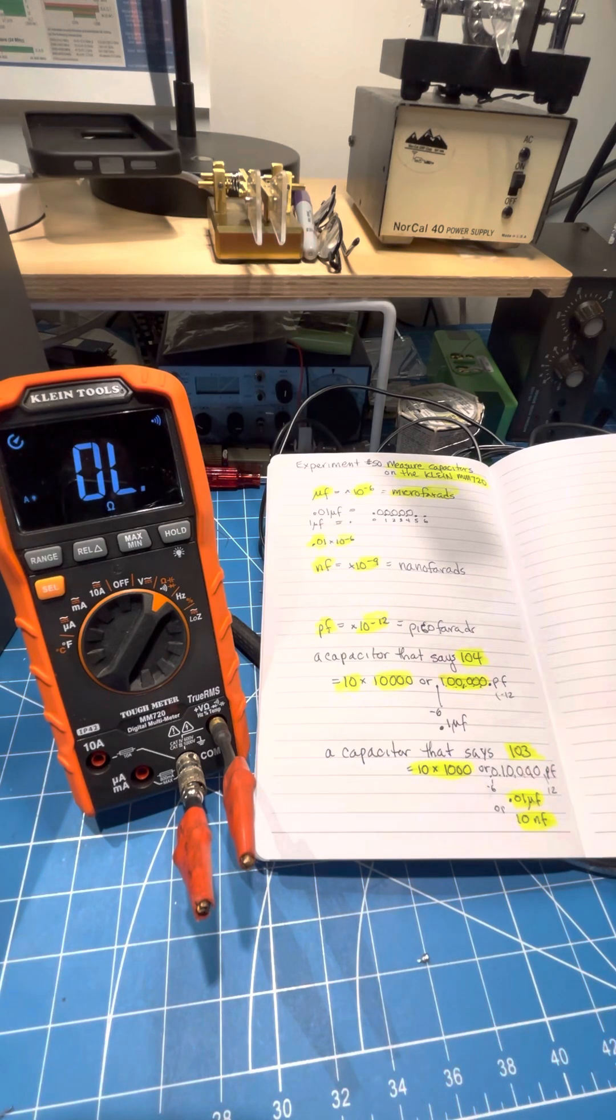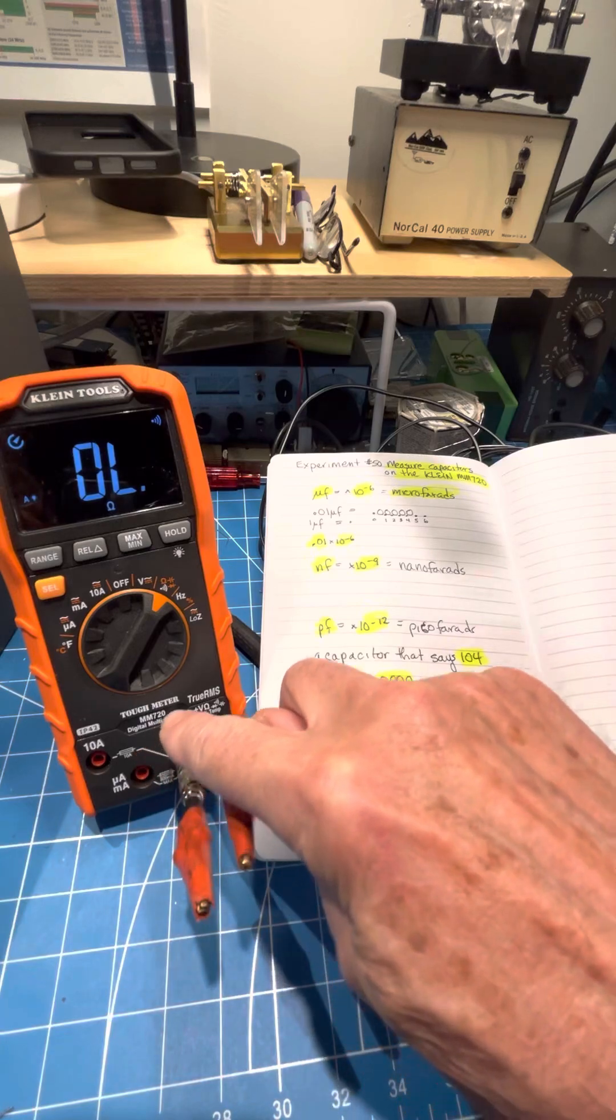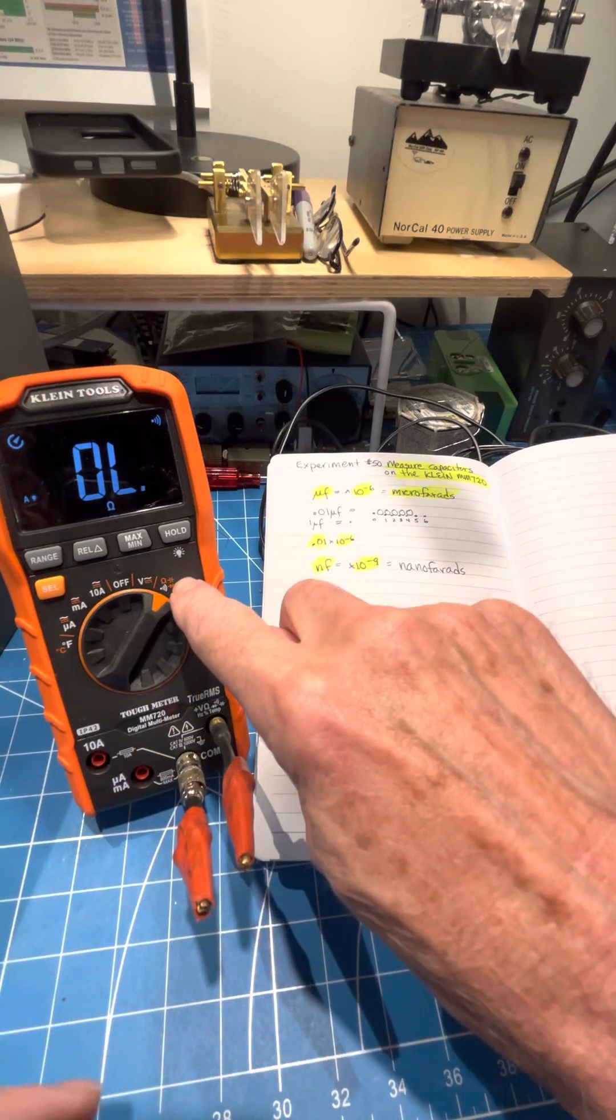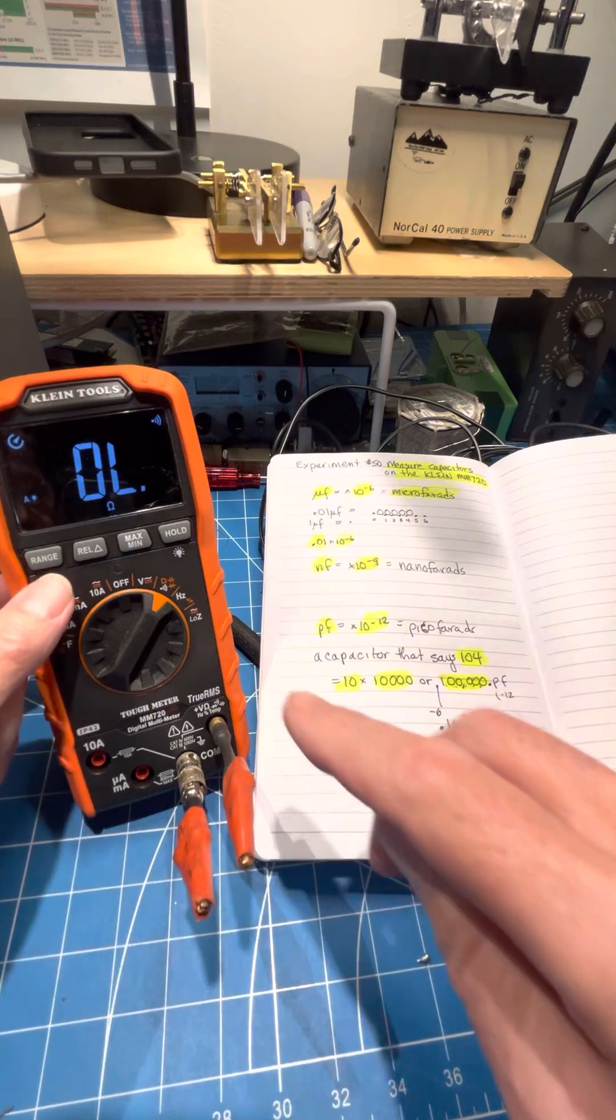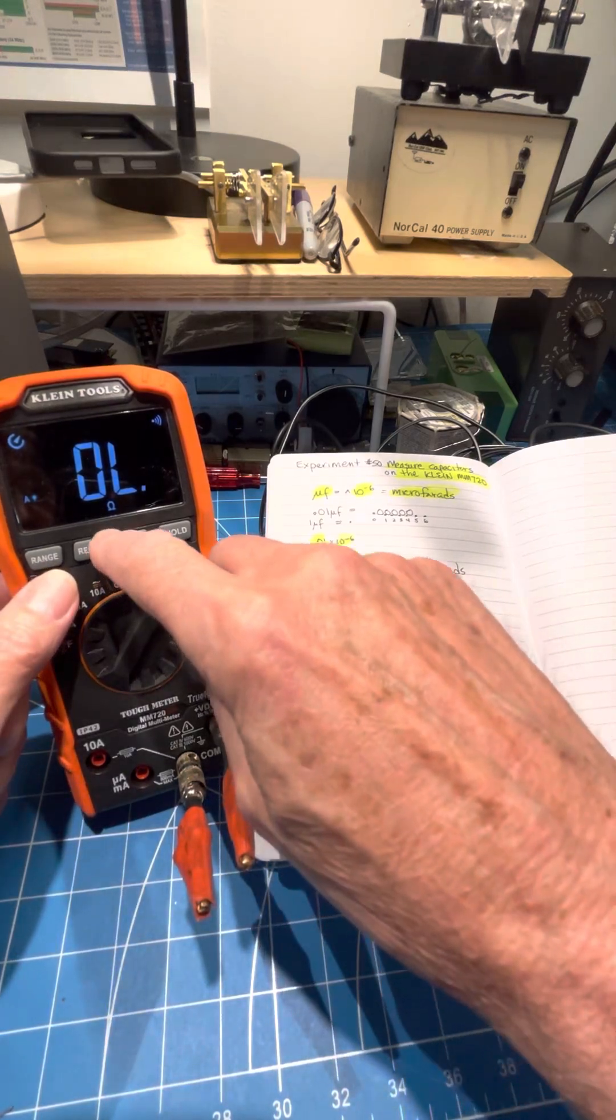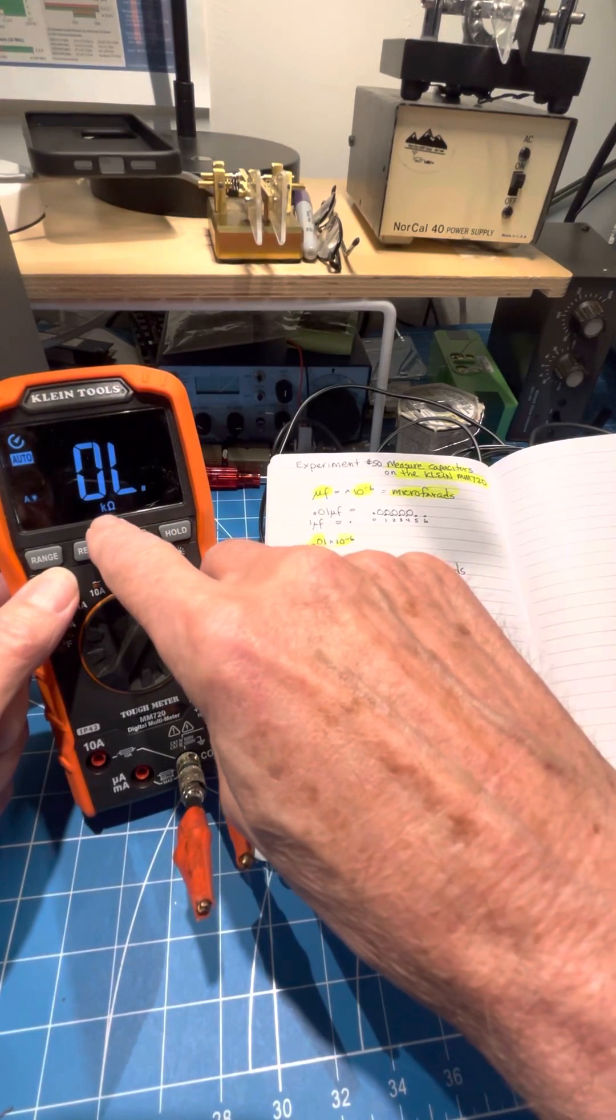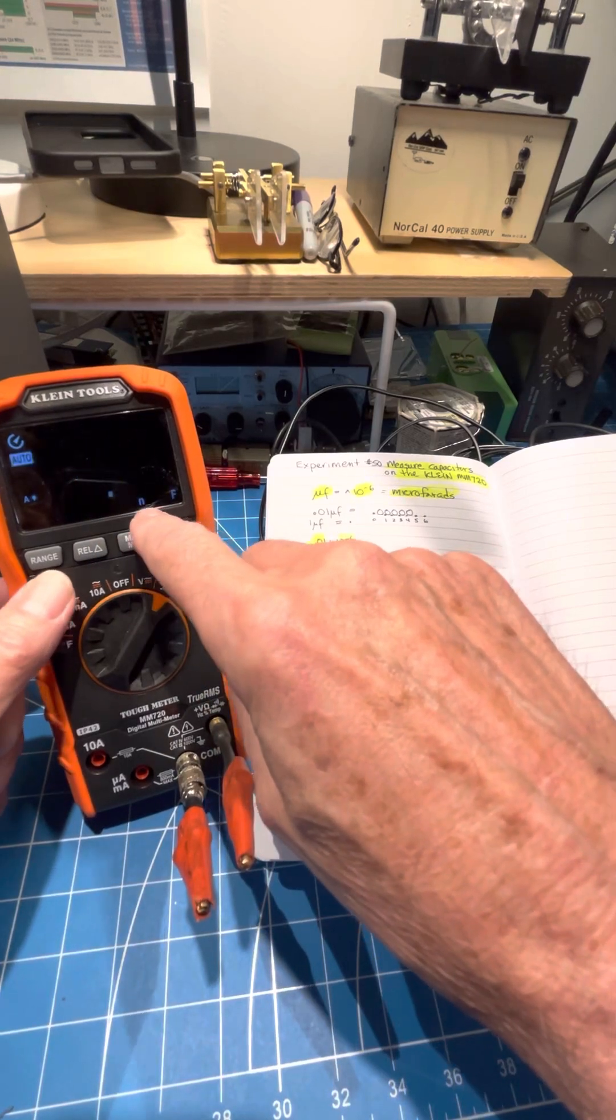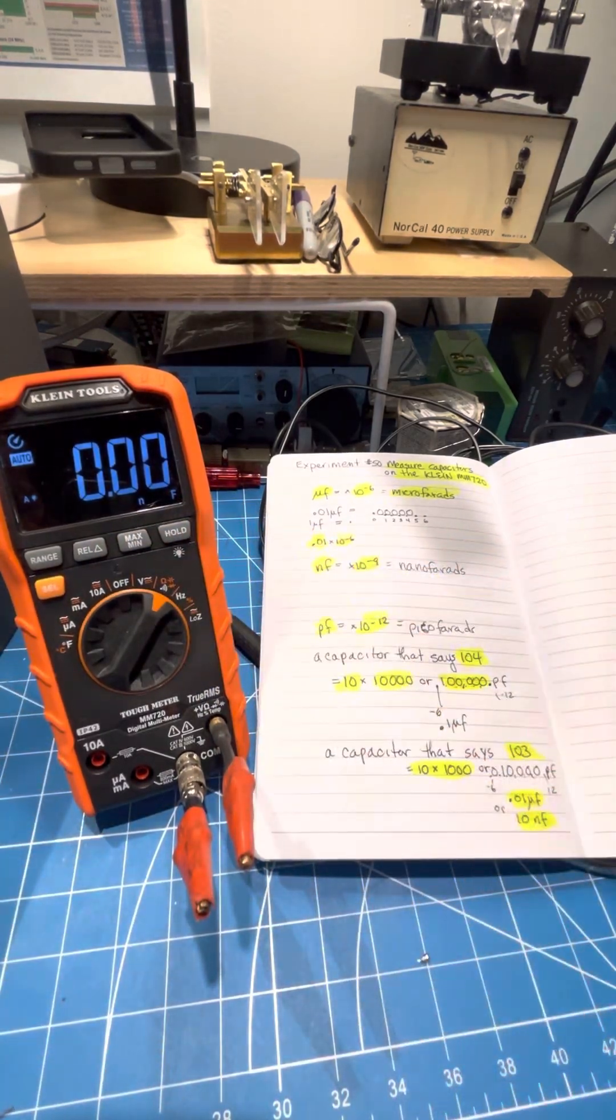So first, I'll tell you, this is a Klein MM720. It's got a capacitor range here. The way you get to it is you turn the meter on and you push select until it says K ohms, voltage, or NF. That means nanofarads.